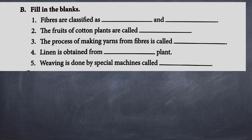Now let's proceed with fill in the blanks. Your first question is: fibers are classified as dash and dash. Question number two: the fruits of cotton plants are called dash. Question number three: the process of making yarns from fibers is called dash. Fourth: linen is obtained from dash plant. And the last question: weaving is done by special machines called dash.